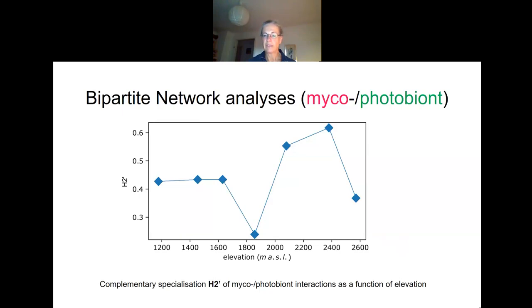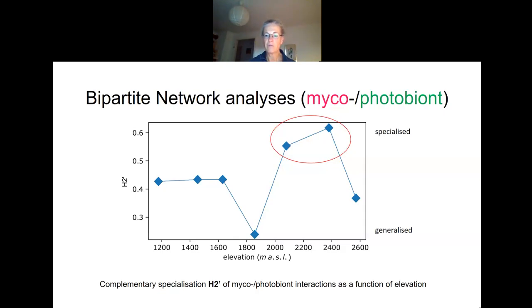We composed for every area a bipartite network and generated values for the network-level index for complementary specialization H2'. It describes the degree of specialization or partitioning among two parties — in our case, micro- and photobionts — and is useful for comparison across different interaction webs. The value ranges from 0 to 1. The interaction network analysis revealed a peak for H2' of the micro- and photobiont interactions in the last third of the gradient. Such mid-domain effects are well known for species richness along gradients but also for specialization.